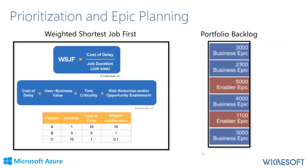Then comes prioritization and epic planning. LPM prescriptively tells us that WSJF — Weighted Shortest Job First — is really the way to do prioritization. It's a calculation that tries to score an epic based on the cost of not delivering and the size. You can see how cost of delay is calculated. The highest-duration epic will actually receive the lowest score.